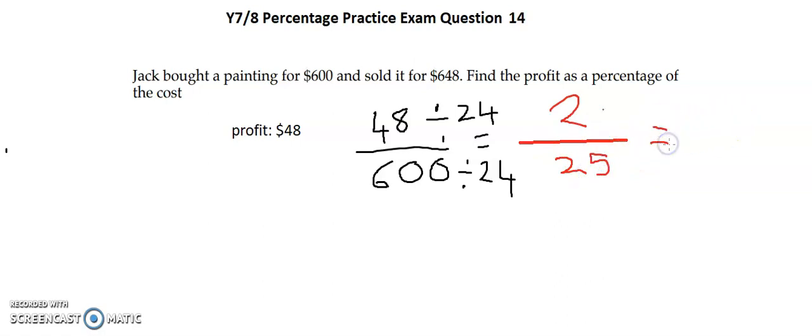Straight away from this, I'm going to use my understanding of equivalents. To get it to $100, I need to times it by 4. Which means I times my numerator also by 4 and get 2 times 4 equals 8. 8 over 100 is equal to 8%. So that is the profit as a percentage of the cost.